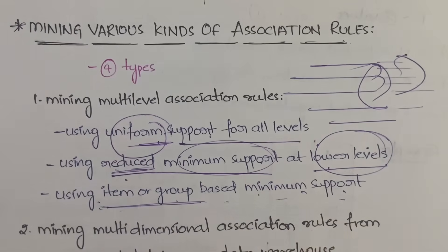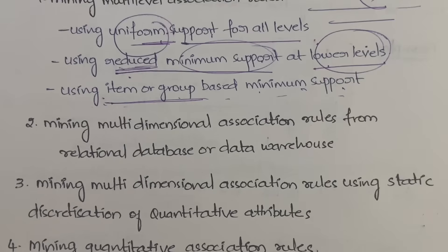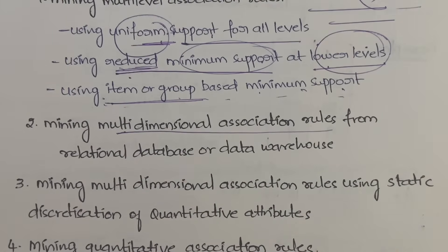The third approach is using item or group based minimum support. Based on the importance of a particular item, you give it more or less support accordingly. Based on that support value, you eliminate the values. So the support is assigned based on the importance of the item or group of items. Next is mining multi-dimensional association rules from a relational database or data warehouse.